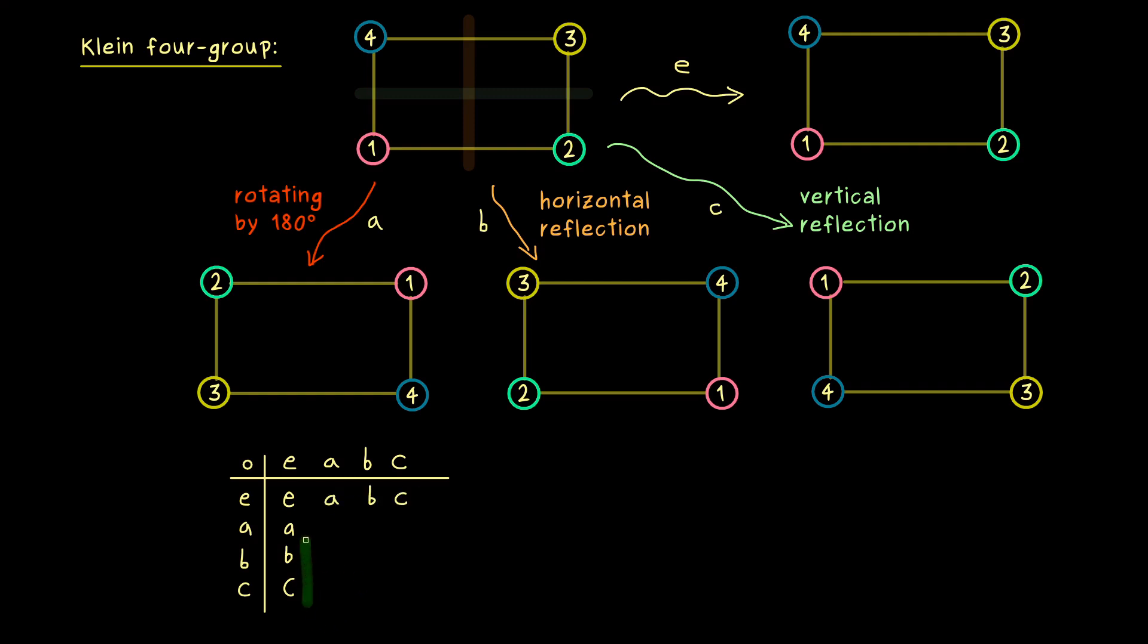In other words, we only have these nine entries here which are interesting for us. So now what happens if we apply A twice? Nothing. We get E out again. Indeed, the same we have for B squared and C squared.